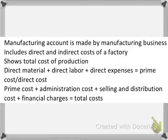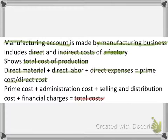A manufacturing account is always made by a manufacturing business. It includes direct and indirect costs of a factory, and it shows the total cost of production. The formula for prime cost or direct cost is: direct material plus direct labor plus direct expenses equals prime cost. Prime cost and direct cost mean the same thing. The formula for total cost is prime cost plus administration cost plus selling and distribution cost plus financial charges.